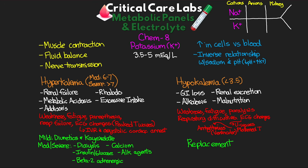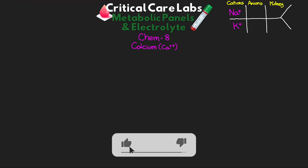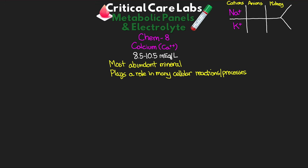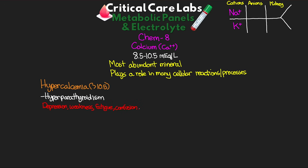Let's move on to our next test — calcium. This is the one test not actually listed in the result skeleton. Normal for calcium is 8.5 to 10.5 milliequivalents per liter. Calcium is the most abundant mineral in our body and plays a role in many cellular reactions. When the level is too high, this is hypercalcemia — greater than 10.5 — most common in patients with hyperparathyroidism. Moderate symptoms include depression, weakness, fatigue, and confusion. More severe symptoms include hallucinations, disorientation, hypotonicity, seizures, and coma. Levels greater than 15 can have cardiac effects such as decreased contractility, depressed automaticity, arrhythmias, AV blocks, and cardiac arrest.